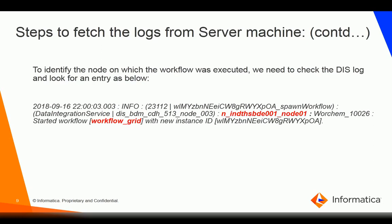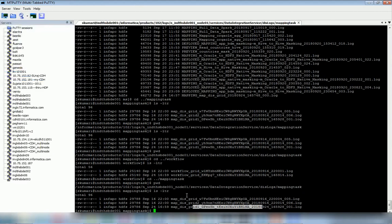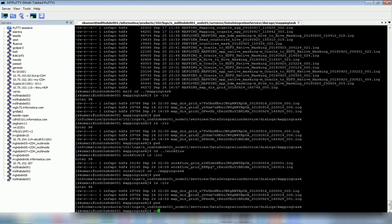As the first step, because I want to download the workflow log, I go to the DIS log and search for the log entry to see where the workflow has been dispatched. This is a sample entry from the DIS log where I can see that 'workflow_grid' has been dispatched to node 1. I then go to node 1 and navigate to the workflow folder, where I can see the workflow log.